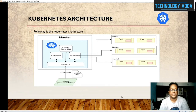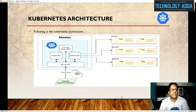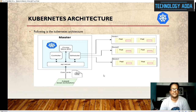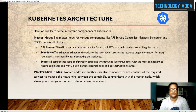Now we are on the Kubernetes architecture slide. You can see a high-level architecture of Kubernetes. There is the master and different nodes — nodes contain different parts. The master has the API server, controller, scheduler, and cluster store. We can see how communication happens through commands to the API server, and from there how requests go to the different nodes. This is the complete architecture showing how the internal process works in Kubernetes.